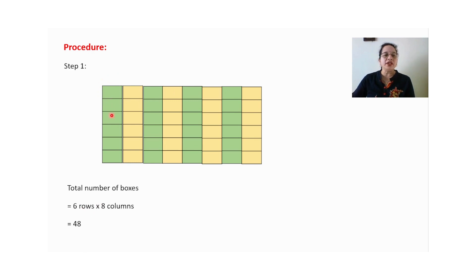These are known as column, first column, second column, third column and these are known as rows. First row, second row, third row, fourth row, fifth row and sixth row. Many times students are having confusion between row and column. Total six rows, eight columns. Total number of boxes are 48.